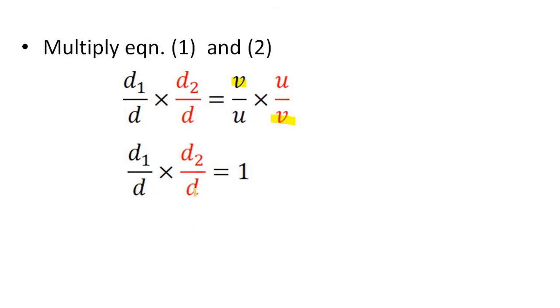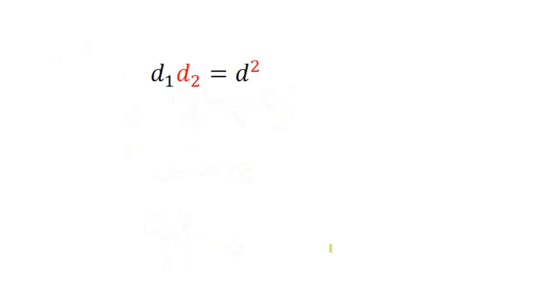D into D is D square. D1, D2 divided by D square equals 1. Or D1 into D2 equals D square, or root of D1, D2 equals D. D equals root of D1 into D2.